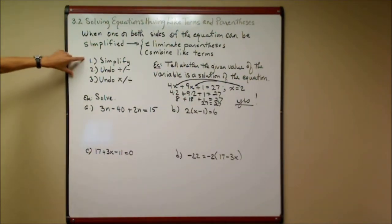Now, let's jump over to here. My steps are going to be simplify, and this is if necessary. If you have like terms, if you have parentheses, you must simplify first. And then you undo your adding or subtracting, and then you undo your multiplying or dividing like we did in the last section on the two-step equations. So I have some examples here.